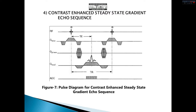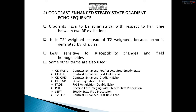This is the pulse diagram of contrast enhanced steady state gradient echo sequence. In this technique, gradients have to be symmetrical with respect to the half time between two RF excitations. This is T2-star weighted rather than T2 weighted because the echo is generated by RF pulses. This method is less sensitive to susceptibility changes and field inhomogeneities. In the literature, there are some other terms used for this technique, for example, contrast enhanced pre-acquired steady state, CE-FAST, or contrast enhanced fast field echo, CE-FFE. Other terms also exist.